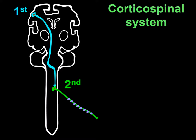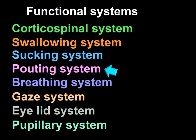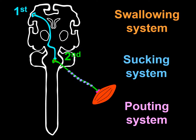The first motor neuron is in the cerebral cortex — called the upper motor neuron. Its axons travel through the centrum semi-ovale, the internal capsule, the brain stem, and the spinal cord to make contact with the second motor neuron. The second motor neuron is at the level of the contralateral anterior horn in the spinal cord, and sends its axons to form nerves. These nerves end in the neuromuscular junction, establishing contact between the nerve endings and the striated muscles. This two-motor neuron arrangement is similar in the swallowing, sucking, and pouting systems, except their lower motor neuron are in the brain stem.